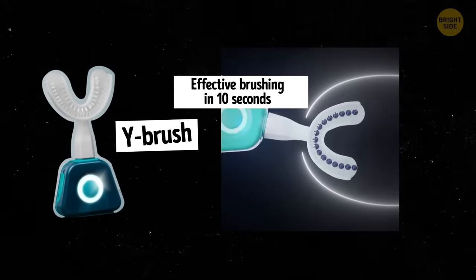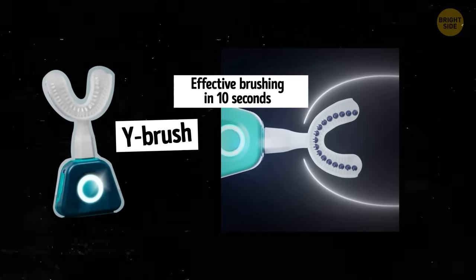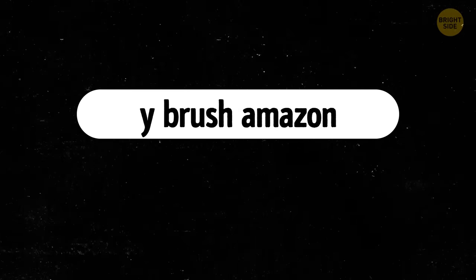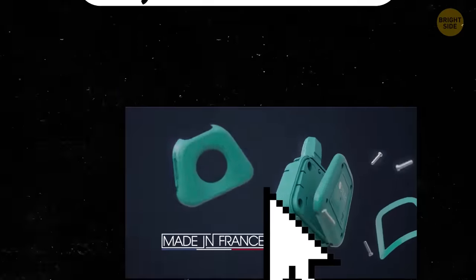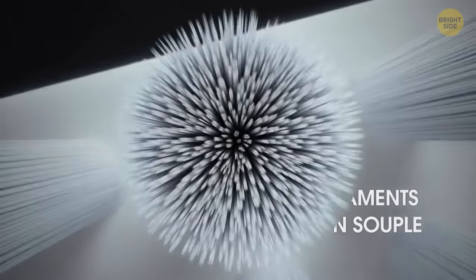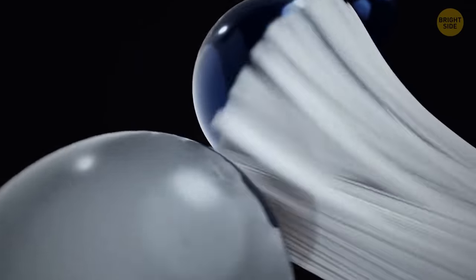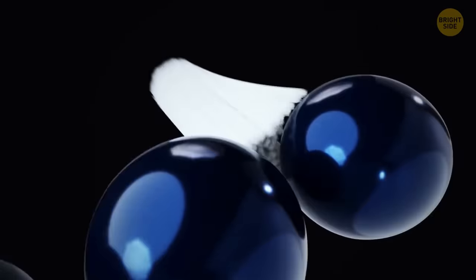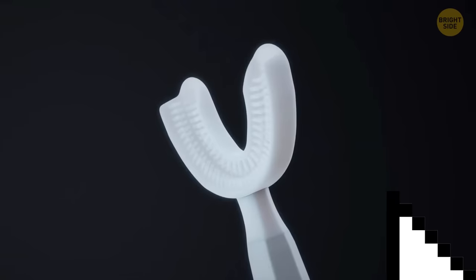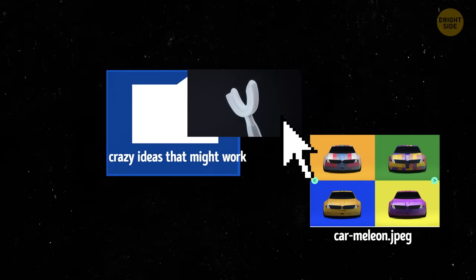The toothbrush, which was first introduced at the Consumer Electronics Show in 2017, and is now available on Amazon for U.S. customers, features 35,000 soft nylon filaments that brush all teeth simultaneously at a 45-degree angle. While the American Dental Association recommends brushing teeth twice a day for two minutes using a soft bristle toothbrush, the Ybrush was developed with the assistance of dentists over four years and is available in adult and kid sizes.